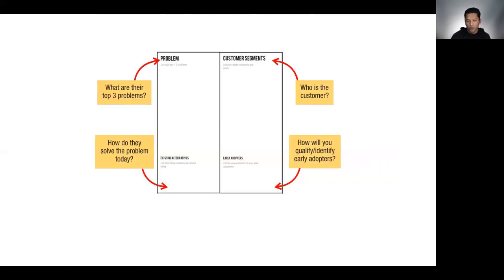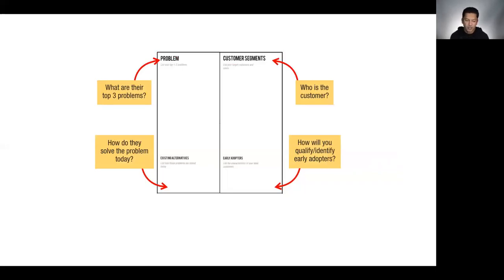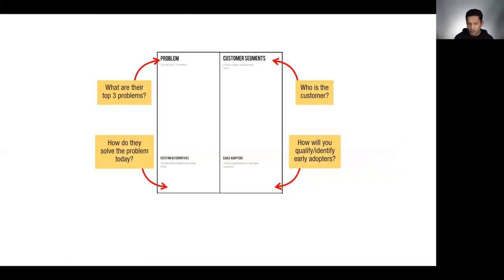I want to understand if they know who their early adopters are going to be. Early adopters are critical — they help you test the initial product and build your minimum viable product. What are the top problems of the early adopters — not the mainstream segment yet? And how do they solve the problem today? That's where existing alternatives come from. I use 'existing alternatives' instead of 'competitors' because when I say competitors, too many people list other startups in their space — and startups might be just as clueless as you are.